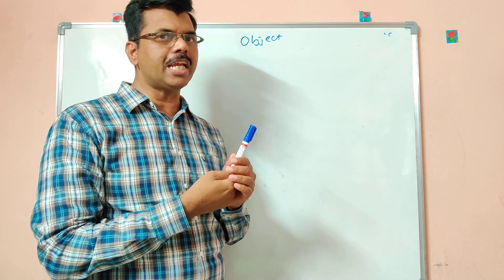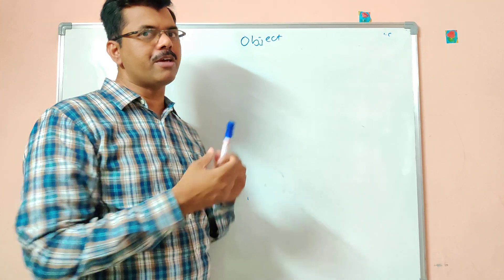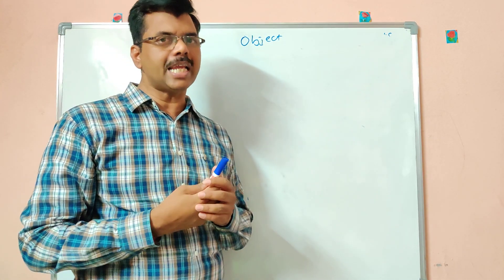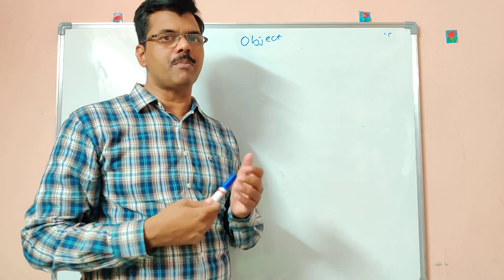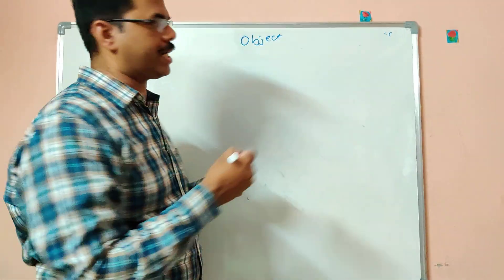And what this marker can do? We can write by using this marker. So any real time entity, where we can give some properties or where it can do some actions. Then we can call it as an object.